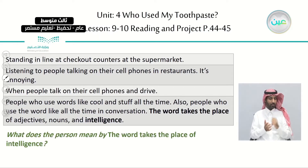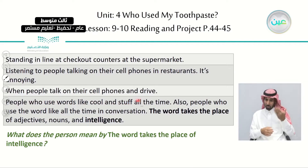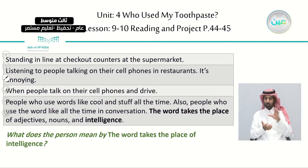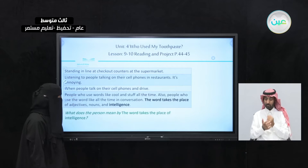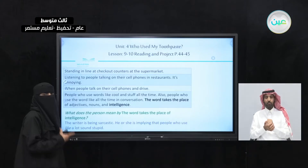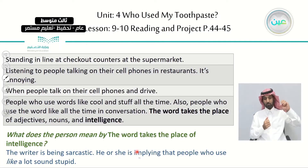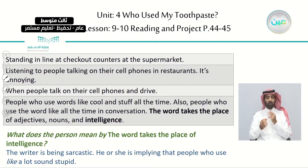What does the person mean when they say 'the word takes the place of intelligence'? The writer is being sarcastic. They're saying the person who uses these words doesn't sound intelligent — they're implying that people who use 'like' a lot sound stupid. That's what is meant by 'takes the place of intelligence' — they actually mean the opposite, which is stupid.